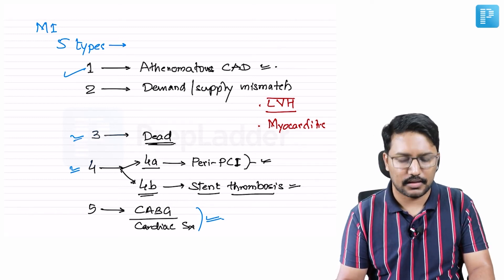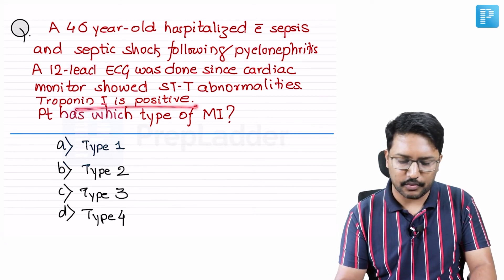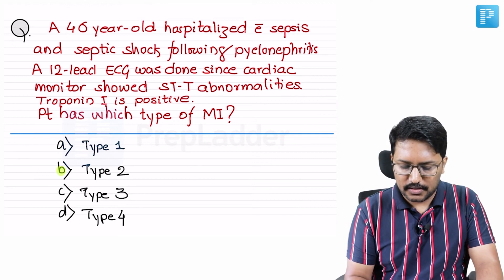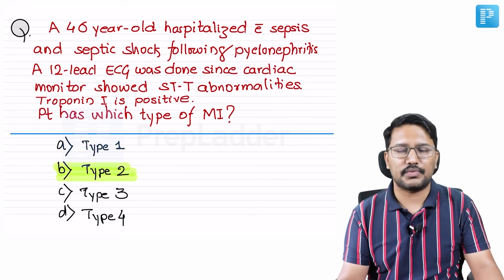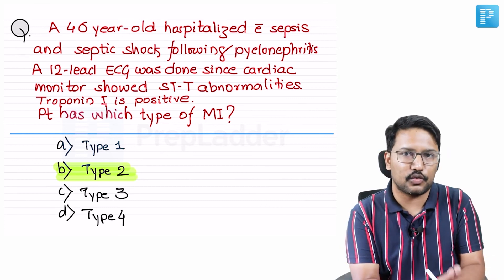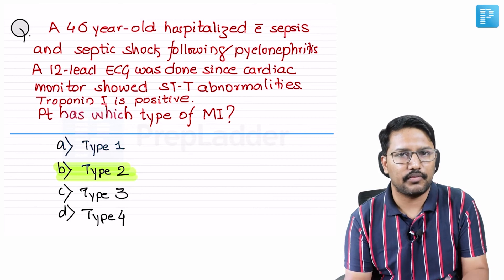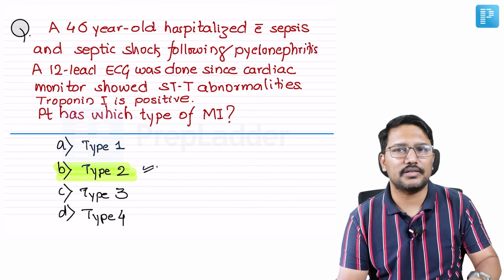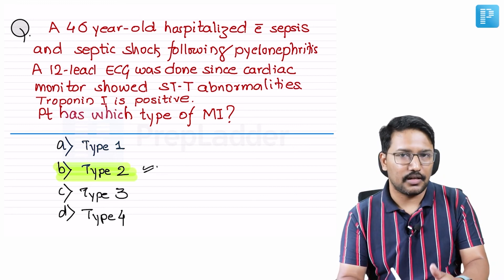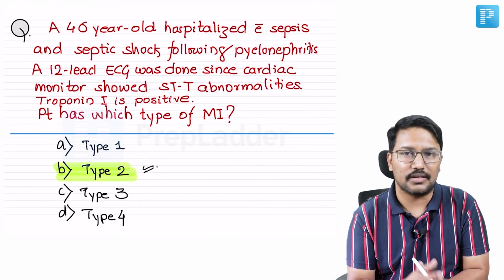Returning to the case of sepsis and septic shock following pyelonephritis with positive troponin I: assuming we are not dealing with atheromatous disease, this becomes Type 2 MI. In sepsis, there is tachycardia; septic shock is a high cardiac output state, and if the patient is hypovolemic, myocardial perfusion is impaired, leading to Type 2 MI. Also remember, severe anemia can present with MI — that is also Type 2, as was demonstrated in a previous question where the coronary angiogram turned out to be normal.